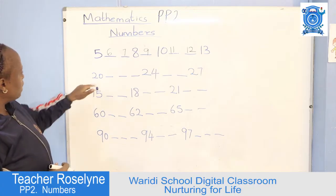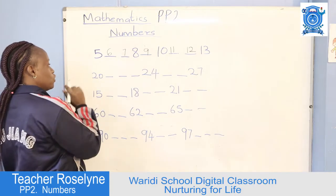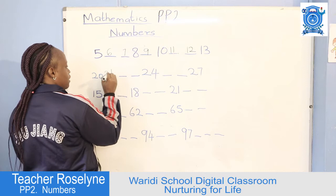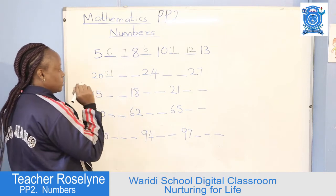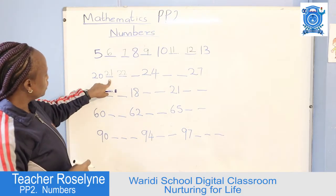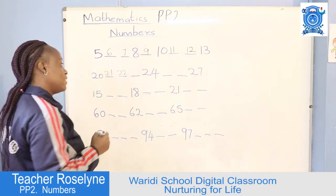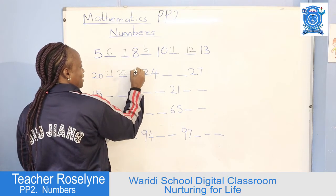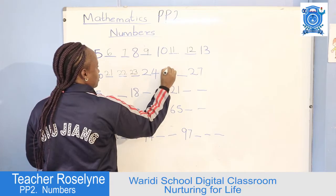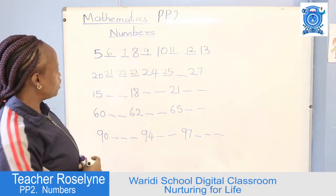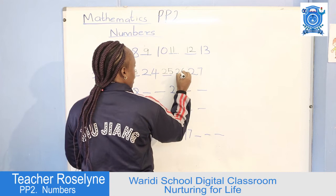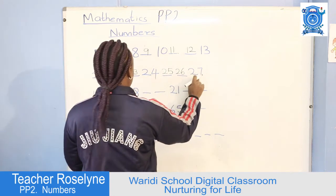Now let's come to this one. Which number is this? 20. From 20 we go to which number? 21. Good — you are going to write 21 here. From 20 we have which number? 22. Yes — 20, 21, 22, 23. Wow, here you have number 23, 24. We have 25 — that's 2 and 5. From 25 we go to 26 — 2 and 6. From 26 we have 27.